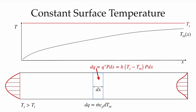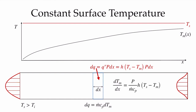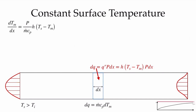The constant surface temperature case is more complicated. The surface temperature is now constant, but the mixed mean temperature experiences exponential decay — at infinite length it would reach the surface temperature and heat transfer would cease. Looking again at a differential control volume of extent dx, the differential heat transfer is q'' p dx, but now q'' is not constant; the driving force changes as the mixed mean temperature approaches the surface temperature.